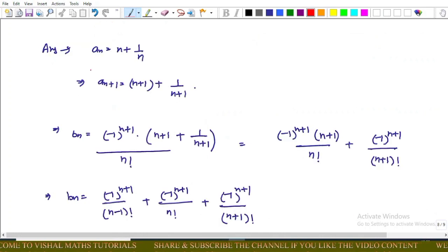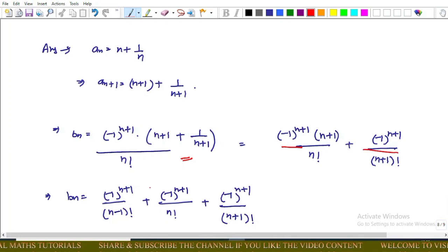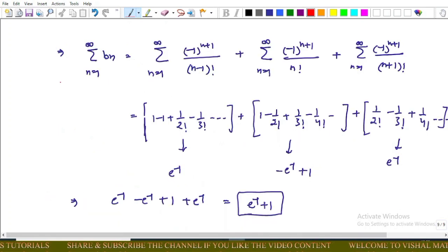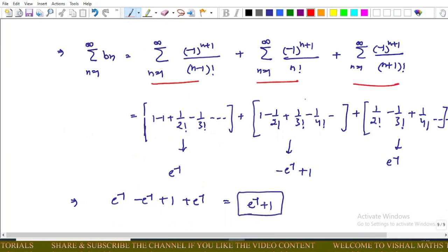Now come to the explanation. As a_n, so a_n plus 1 equals n plus 1 plus 1 upon n plus 1, and b_n equals this form. We arrange the terms such that this plus this. Now again, simplify these terms in three terms: that is 1, 2, and 3. And apply summation on these three terms.